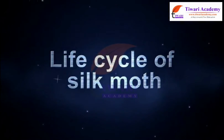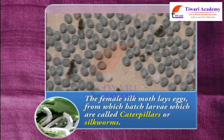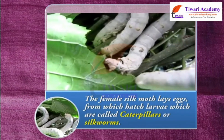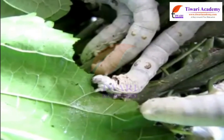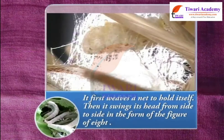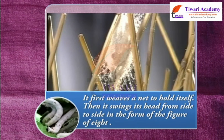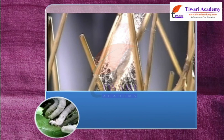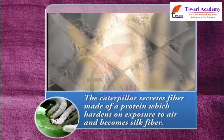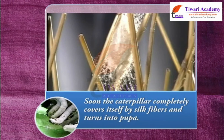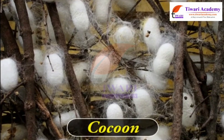The life cycle of a silk moth: The female silk moth lays eggs from which hatch larvae, called caterpillars or silkworms. They grow in size, and when the caterpillar is ready to enter the next stage called pupa, it first weaves a net to hold itself. Then it swings its head from side to side in the figure of eight. During these movements, the caterpillar secretes a fiber made of protein, which hardens on exposure to air and forms silk fiber. Soon, the caterpillar completely covers itself with silk fibers and turns into pupa.